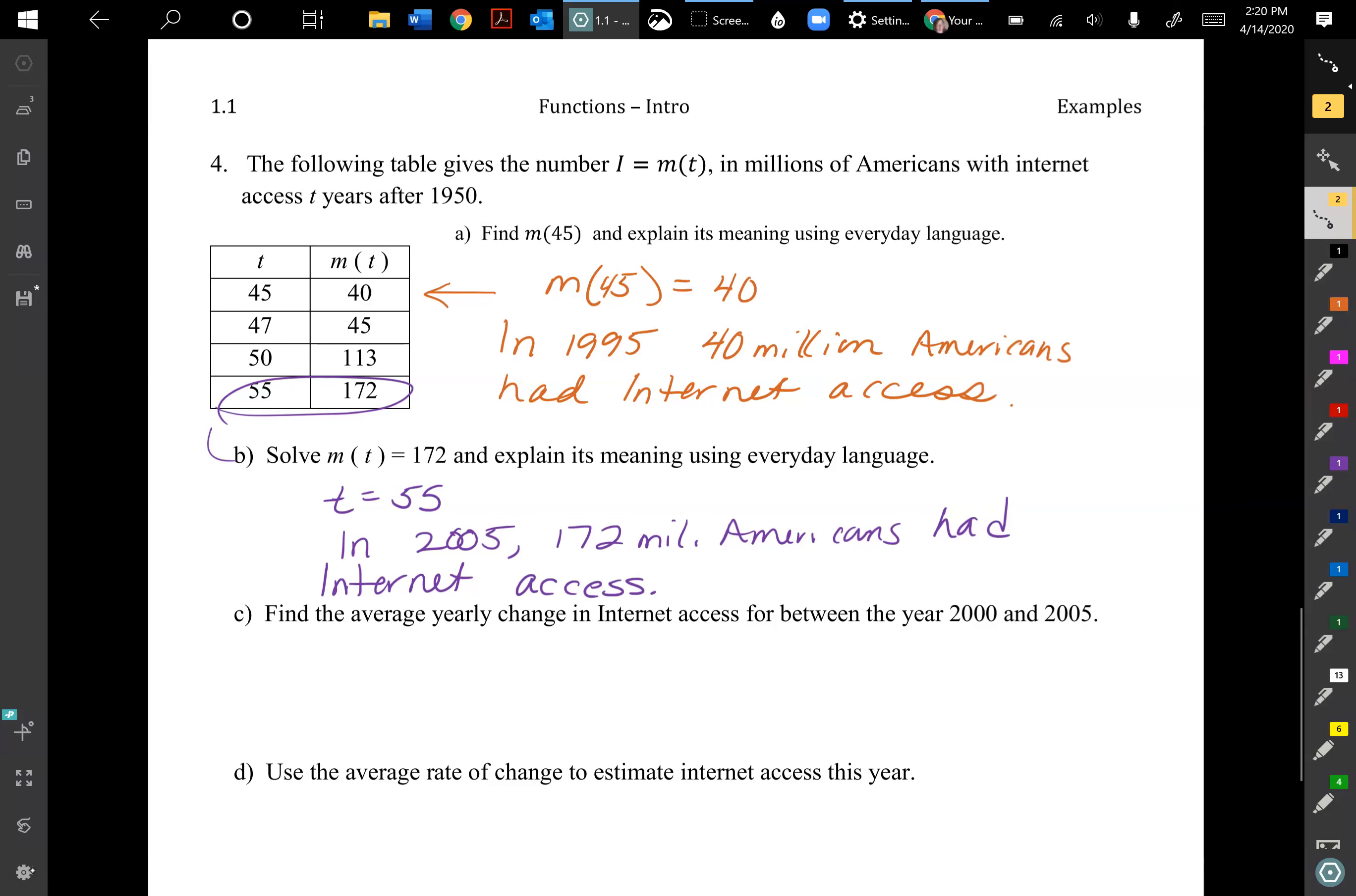For part c, find the average yearly change in internet access between the year 2000 and 2005. So we're doing an average rate of change. This is pretty common, you don't necessarily need to write the formula out each time, but do write out your numbers that you're putting in. We're going to use the points that we had from part a and part b. We have 172 minus, I guess we're just using part b and we have to look up for year 2000, which our output would be 113, and then divided by the t values for those.